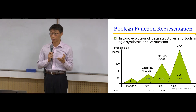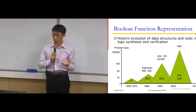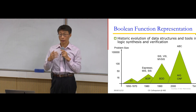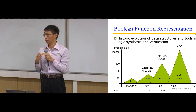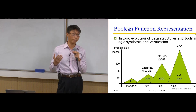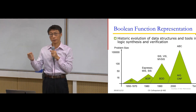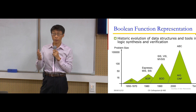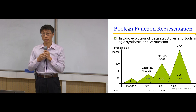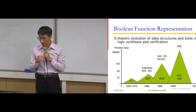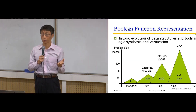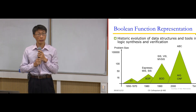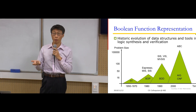Here is the evolution of data structures people have used to manipulate Boolean functions. In the 1950s to 70s, people used truth tables to represent Boolean functions, scalable up to about 16 Boolean variables. In the 1970s–80s, people migrated to sum-of-product expressions, or disjunctive normal form. In the 1990s, people invented a new data structure called Binary Decision Diagrams (BDD) — a reduced binary tree structure to represent Boolean functions — scalable up to around 100 Boolean variables.